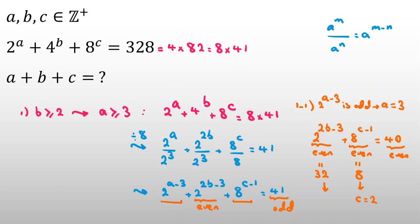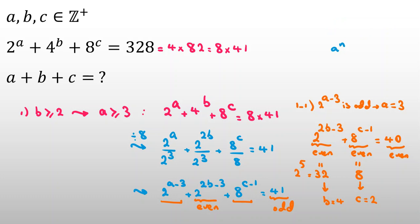The remaining term is 32, which is 2 to the 5th, so 2B minus 3 equals 5, meaning 2B equals 8 and B equals 4. So our first solution is A equals 3, B equals 4, C equals 2, giving A plus B plus C equals 9.